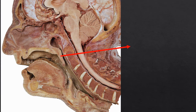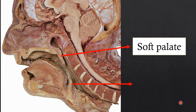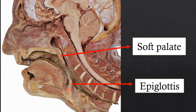Moving to the next structure: the soft palate. Just above the tongue, the hanging projection is called the soft palate. Questions usually asked regarding the soft palate include any three or four muscles of the soft palate, which they may ask in the practical examination. Here in the sagittal section we can also identify the epiglottis. The tongue is also visible — they may ask the extrinsic muscles of the tongue and sometimes the nerve supply of the tongue.